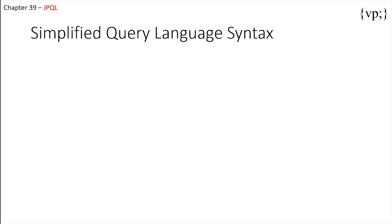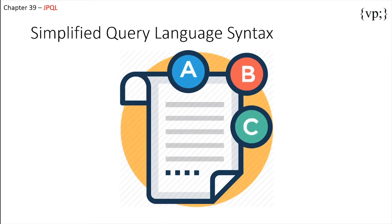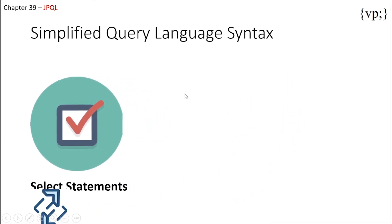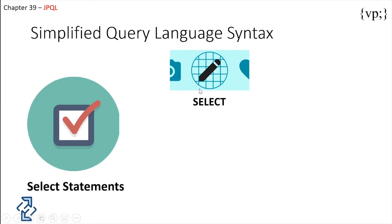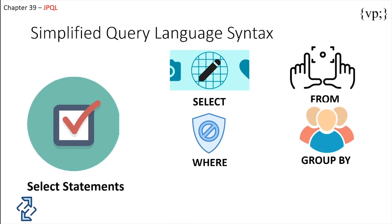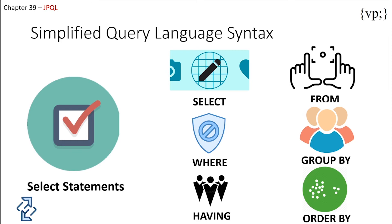This part of the episode briefly goes over the language of JPQL. The select query defines six clauses to retrieve information from the database: the SELECT clause, which defines the types of objects or values returned by the query; the FROM clause, which defines the scope of the query; the WHERE clause, a conditional expression that restricts the objects or values retrieved; the GROUP BY clause, which groups query results according to a set of properties; the HAVING clause, used with GROUP BY to further restrict results according to a conditional expression; and finally the ORDER BY clause, which sorts the objects or values returned into a specified order.